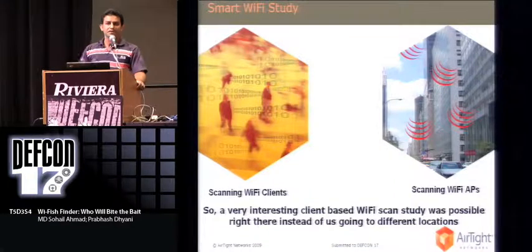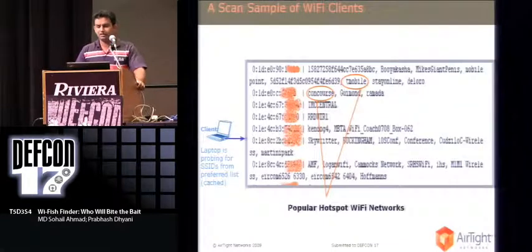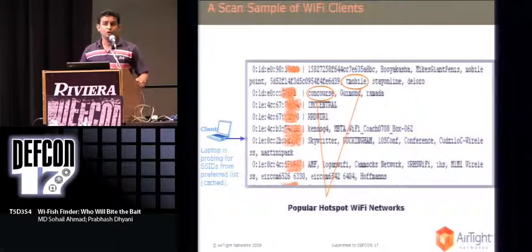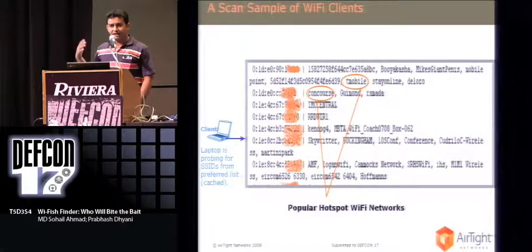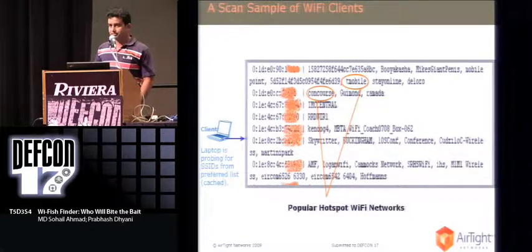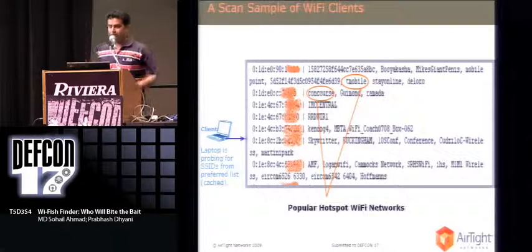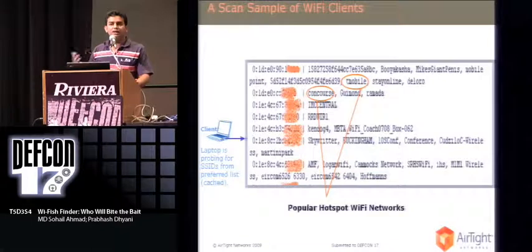With this thought in mind, we started collecting client data. Here is a sample of client data collected using a tool called AerodumpNG. On the left-hand side, you can see a lot of MAC addresses — basically client MAC addresses. On the right-hand side, you can see the probed SSID lists — the Wi-Fi networks that the clients were found to be probing for. In some cases, clients were also probing for multiple Wi-Fi networks.